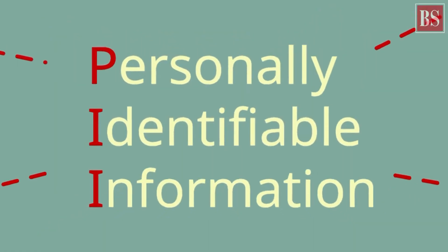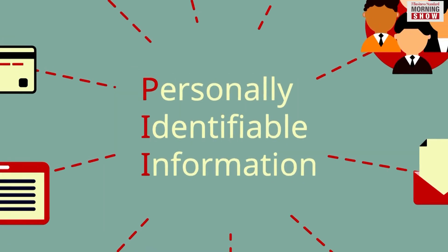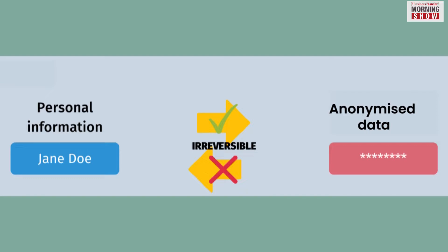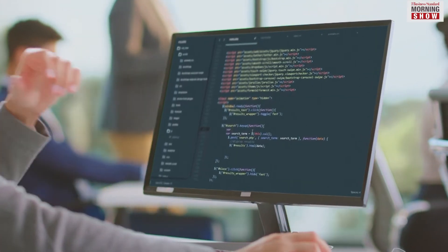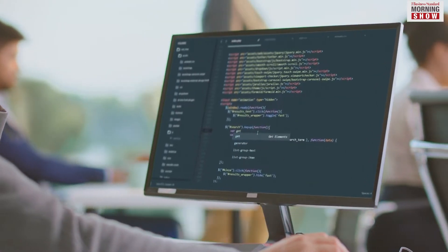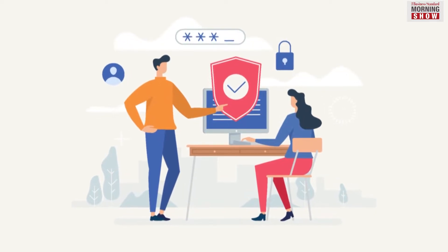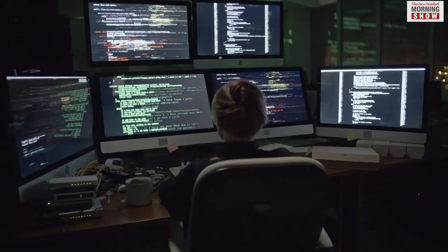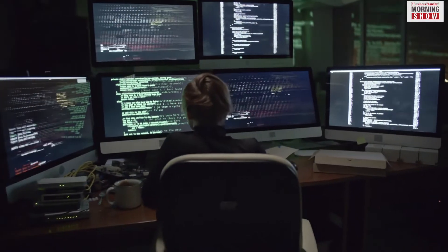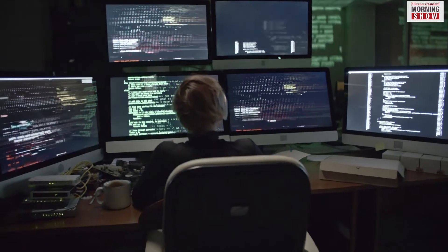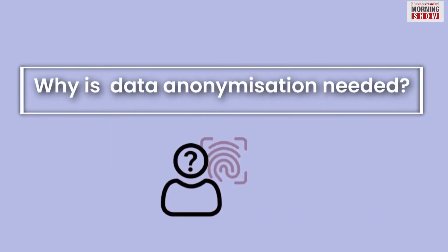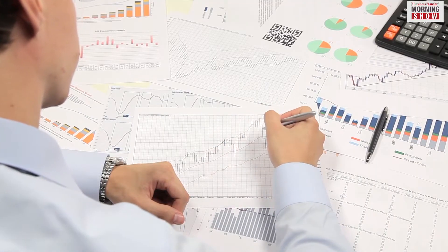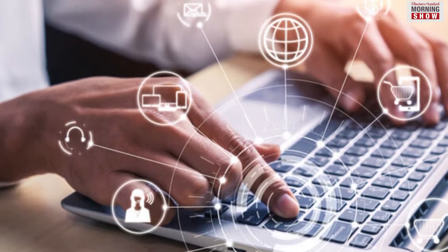Anonymization of data is a technique where personally identifiable information is removed or encrypted and the data cannot be associated with any one individual. The data is stripped of personal identifiers like social security numbers. It helps in protecting user privacy and avoiding the risk of compromising confidential and individual information. Data anonymization helps in evaluation and analysis of large sets of data without compromising on individual privacy.